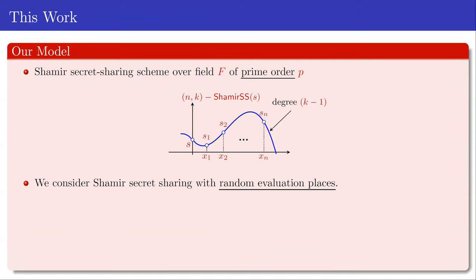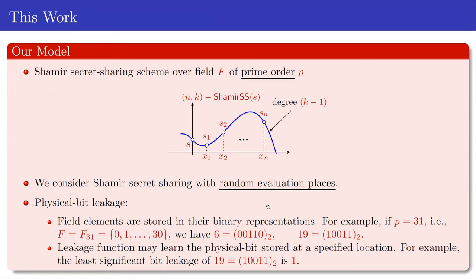In our work, we consider Shamir secret sharing schemes with random evaluation points, meaning x1, x2, ..., xN are chosen uniformly at random. For the leakage model, we consider physical bit leakage: all shares are stored in their binary representations. For example, in a prime field of size 31, if the share is 6 we store 00110, and if the share is 19 we store 10011. The leakage function may learn the physical bits of the shares; for example, the least significant bit of 19 is 1.